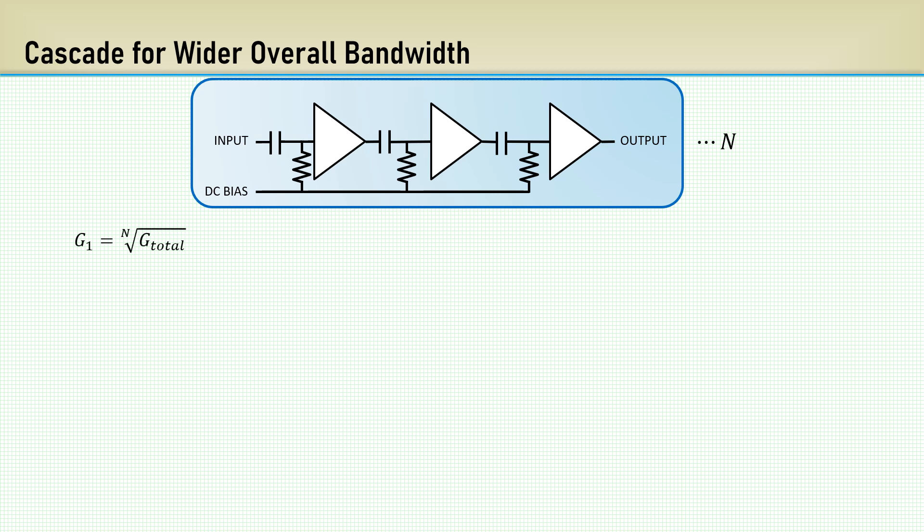The gain required of each amplifier is the nth root of the total gain. In this case, for a total gain of 100, we only need each single stage to have a gain of 4.64 V per volt. An easier way would have been to divide the total required gain of 40 dB by 3 to get an individual stage gain of 13 and a third dB.